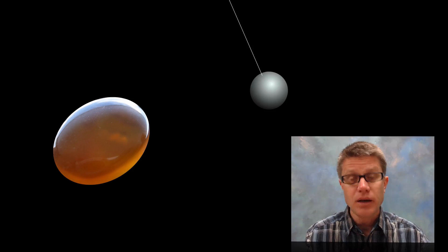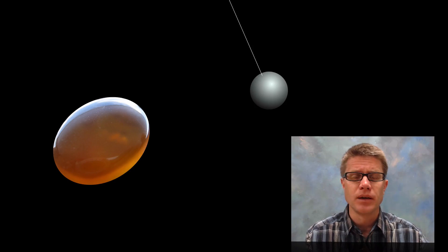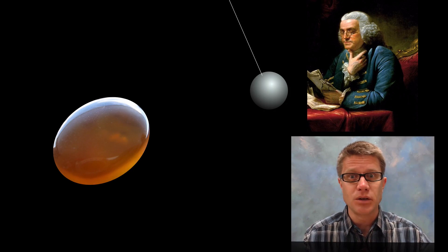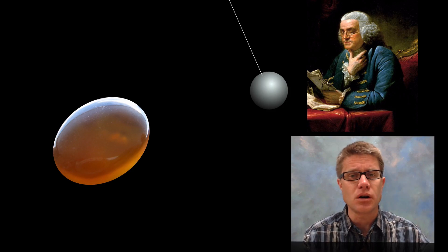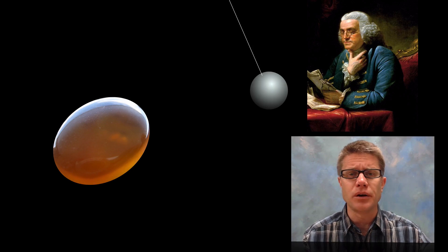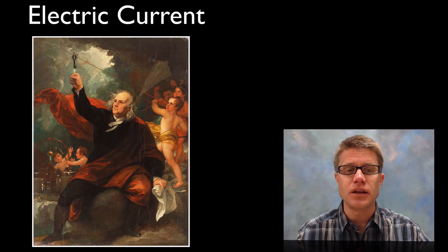So what did we see? We saw attraction between those two objects. And then we also saw repulsion. And so early experimentation on this led scientists like Benjamin Franklin to speculate that there was charge. And there were two types of charge. And we just arbitrarily called those positive and negative. And we'll talk more about those in the next video.